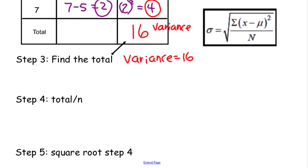Now we're going to go ahead and take that variance. So that's our total. Divided by how many data set points we have. We have 7 of them. So 16 divided by 7 is approximately 2.2857.